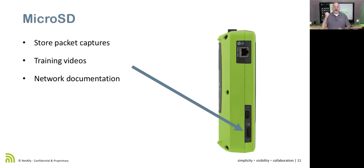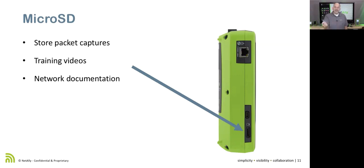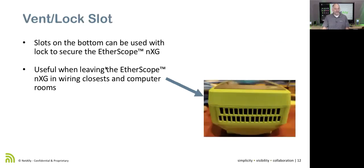We can do packet captures and upload them to LinkLive, or save them to the SD card — pop it out, put it in your computer, open Wireshark, and see what's going on. This will capture at full line rate at 10 gig, up to one gigabyte, and at full line rate at 1 gig as well. With a filter applied, this is a great way to capture and analyze packets.